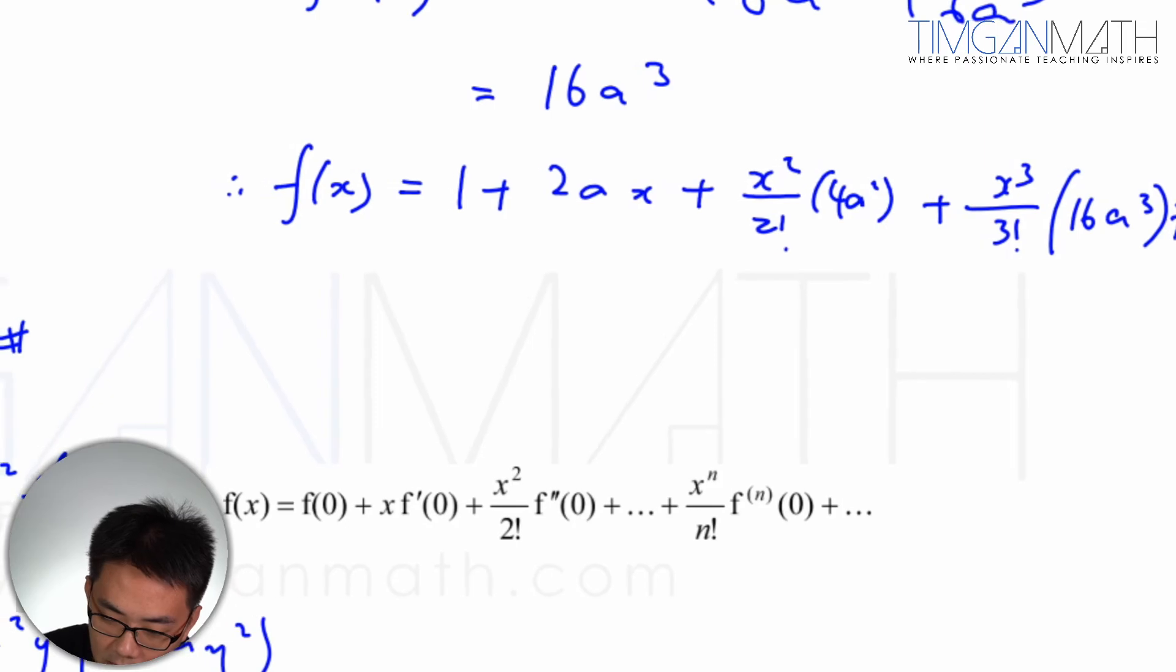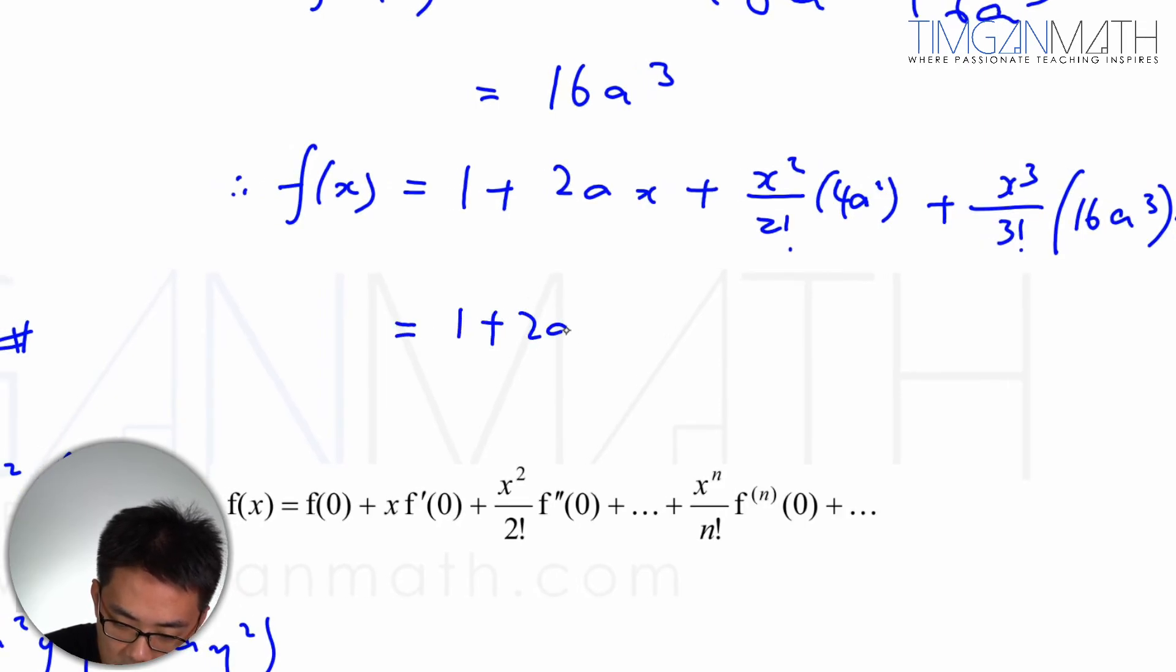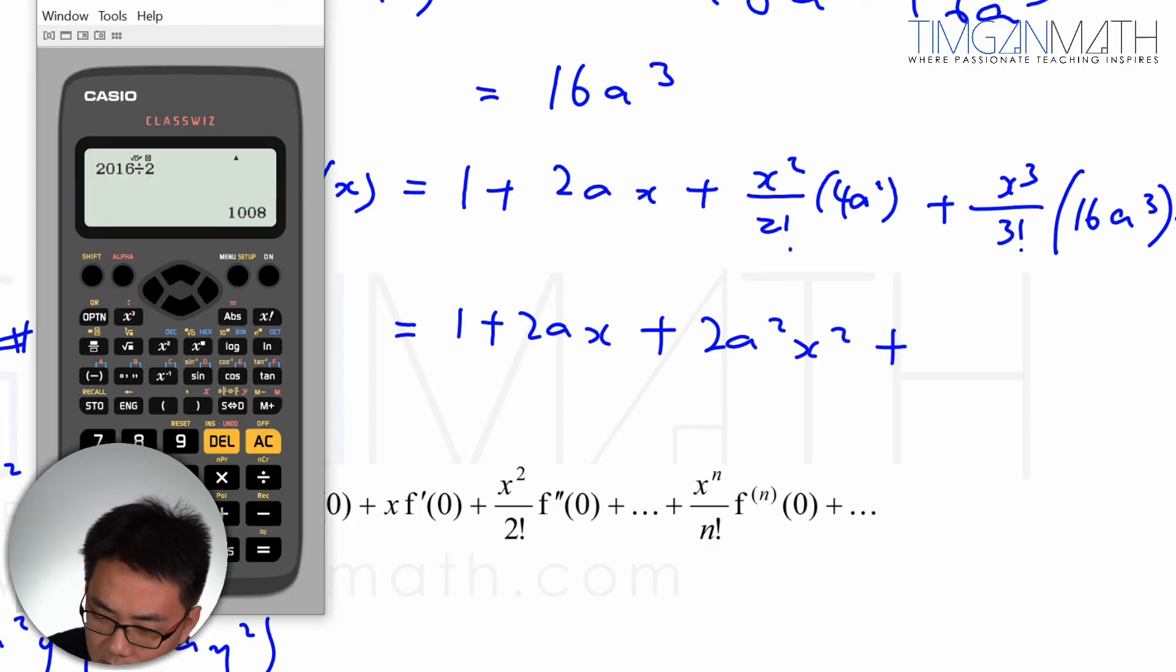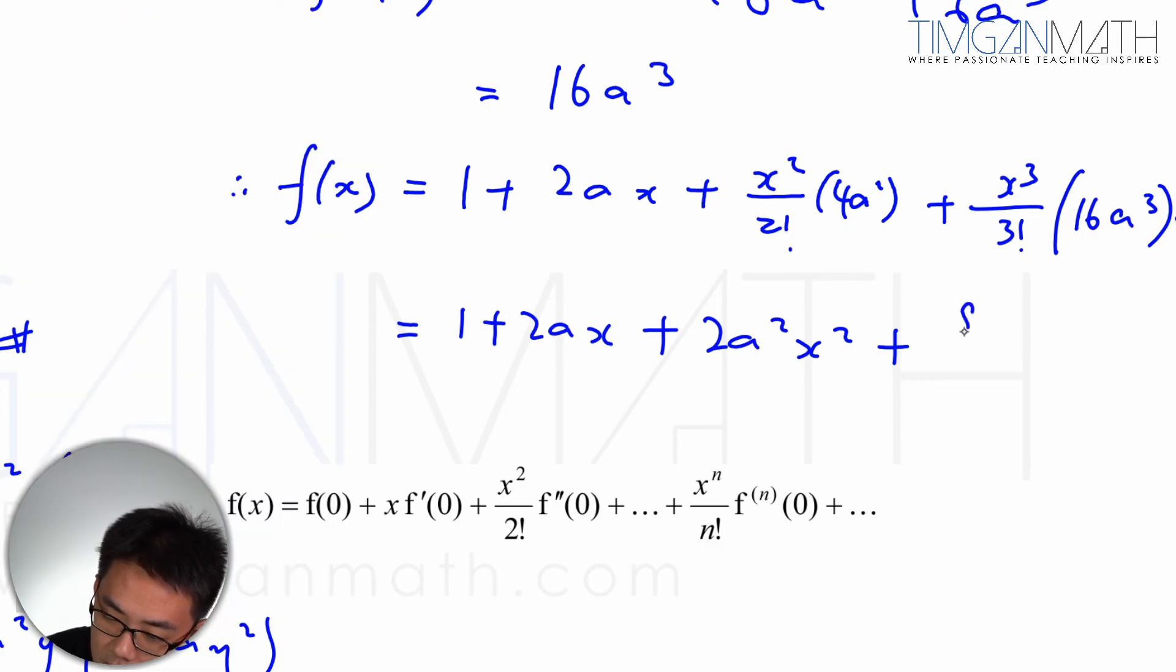Okay, so key in calculator, I think this will just be 1 + 2ax + 2a²x², 16 divided by 6, which is 8/3 a³x³.